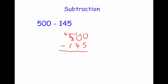So we borrow again: cross off the 10, make it a 9, and now make this a 10. 10 take away 5 is 5. 9 take away 4 is 5. And 4 take away 1 is 3. So if you're trying to borrow and it's a 0, you need to borrow and then borrow again. The answer is 355.